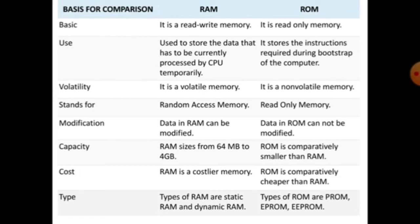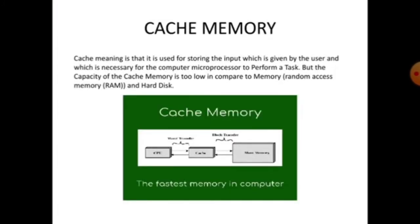Now we will study about another kind of memory, electronic memory, that is cache memory. Cache memory is used for storing the input which is given by the user and which is necessary for computer microprocessor to perform a task. It is a high-speed temporary electronic memory where the most recently or more frequently used data are stored to avoid the reload from a slower storage medium. It is used to enhance the performance of CPU.